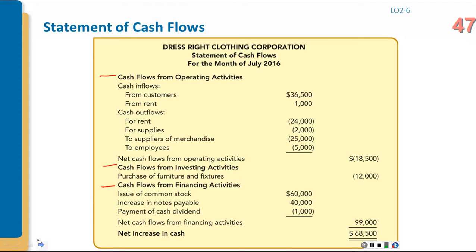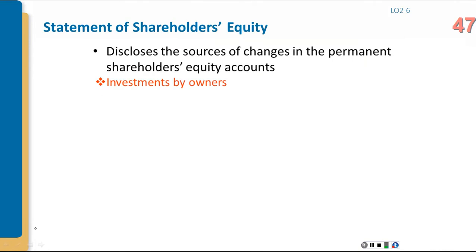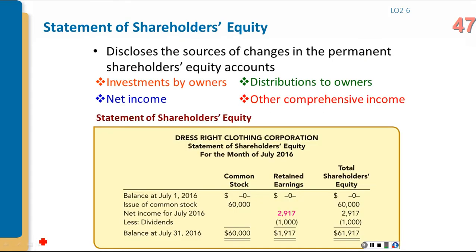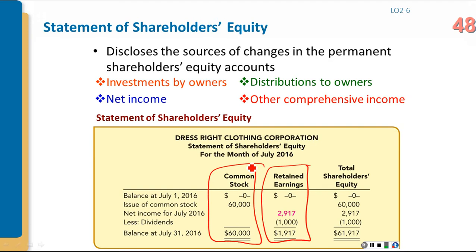The statement of shareholders' equity — previously called the statement of retained earnings — shows changes in the permanent shareholders' equity accounts, including investments by owners (such as purchasing additional stock) and distributions to owners such as dividends. It is an expanded version that includes not just retained earnings but also common stock and other equity items.